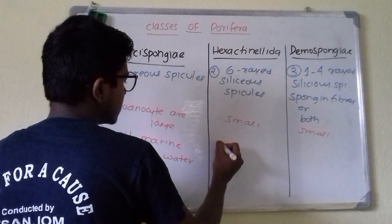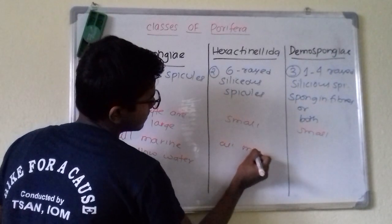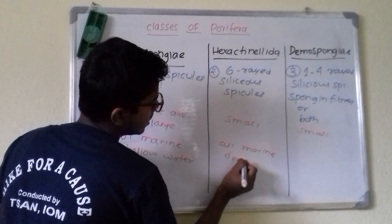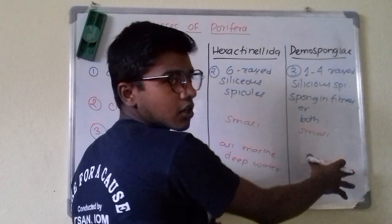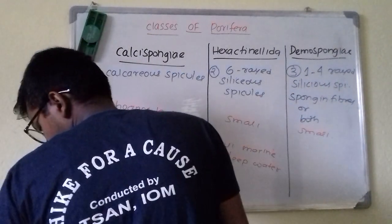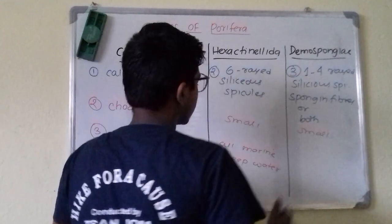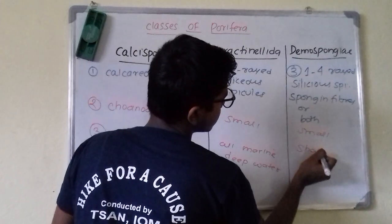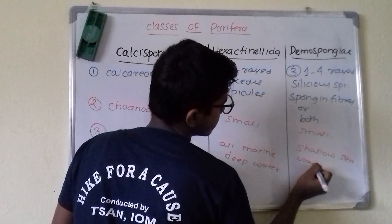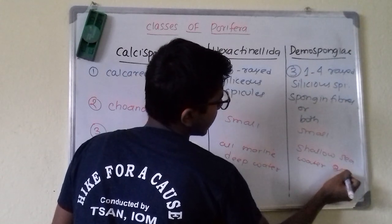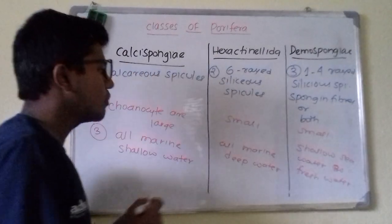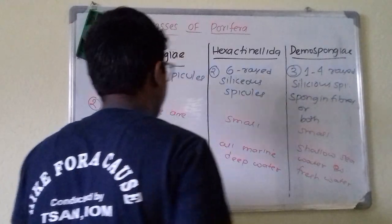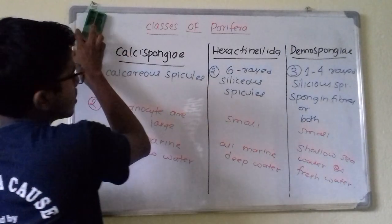In Hexactinellida, they are also marine but found in deep waters. In Demospongia, they are found in shallow sea water as well as in fresh water — a combination of both marine shallow and freshwater habitats.